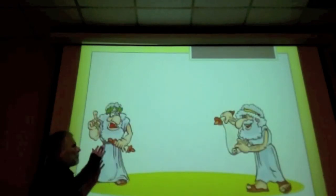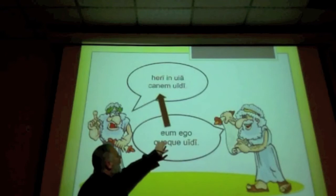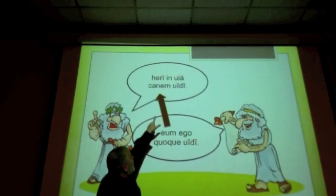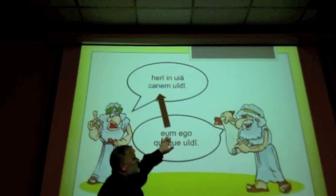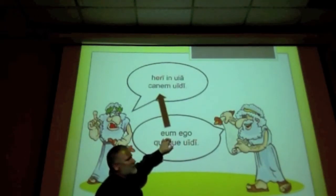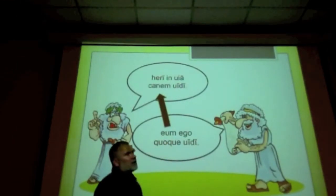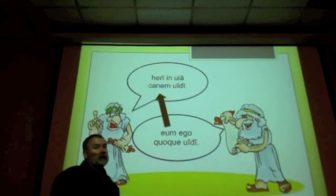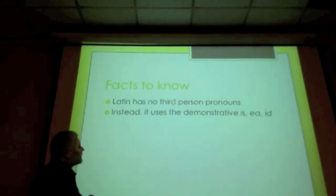Here are our poets again: cranky poet, nice poet. The cranky poet says 'heri in via canem vidi' — 'yesterday on the road I saw a dog.' The response uses 'eum' — the masculine accusative singular of is/ea/id — referring to the dog. This could be translated as 'I also saw it' or 'I also saw him.' In Latin it must be masculine because canis is masculine. This is how Latin deals with not having a third person pronoun: it uses the demonstrative is/ea/id. Facts to note: Latin has no third person pronouns; instead it uses is/ea/id.